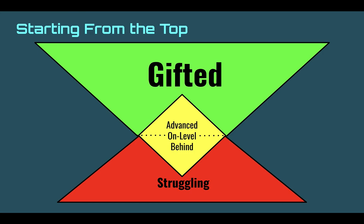The first thing we need to think about is flipping the old model of RTI on its head. Tier one instruction is for your truly on-level kids, and we often think next about kids who are behind or struggling. We very rarely differentiate up for our advanced or gifted kids. As you are planning, I really want you to think about starting with your gifted learner in mind. Think about the most rigorous, most enriched experience you can create. Then think about how you can scaffold that experience so that your on-level and struggling kids can also benefit.